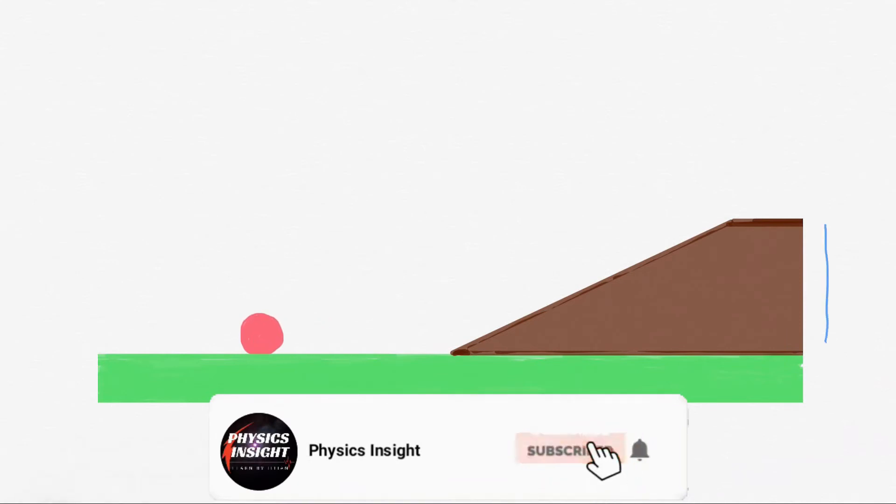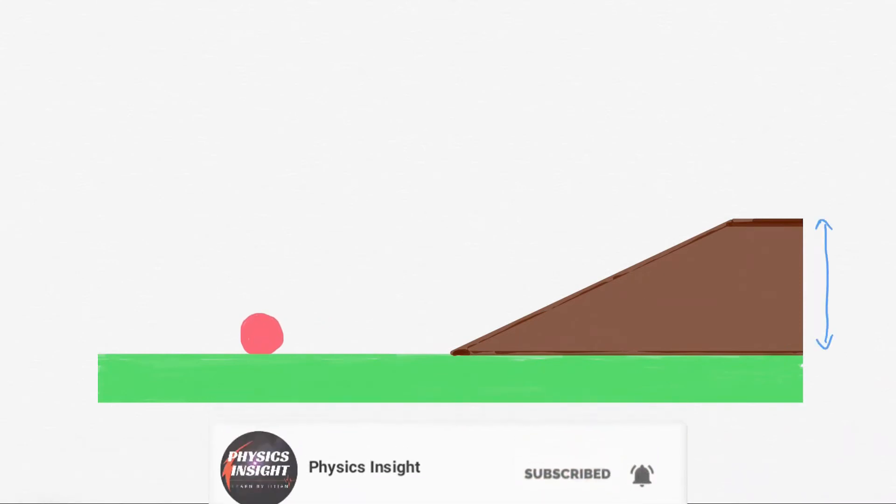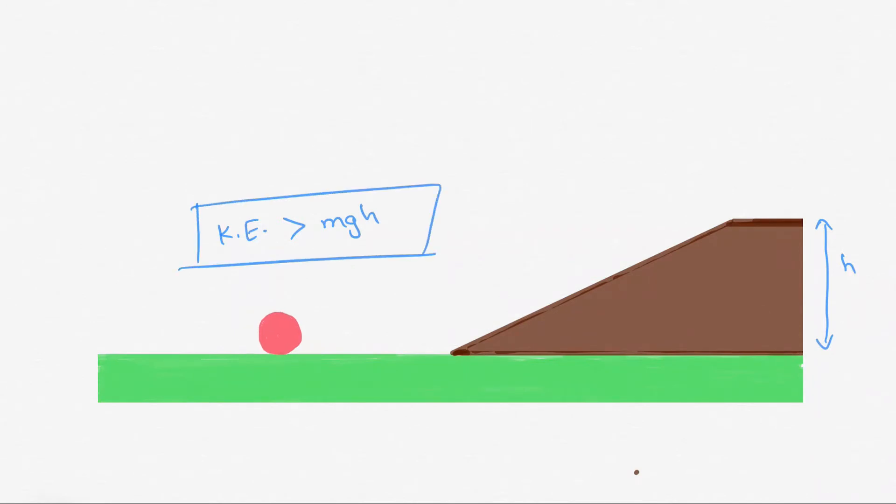So what we need to do is provide the ball kinetic energy greater than the potential energy of the ball which it will attain at the maximum point of the inclined plane, i.e. mgh. Now the ball easily crosses the barrier, losing some of its energy.